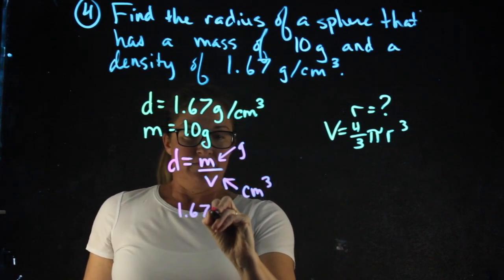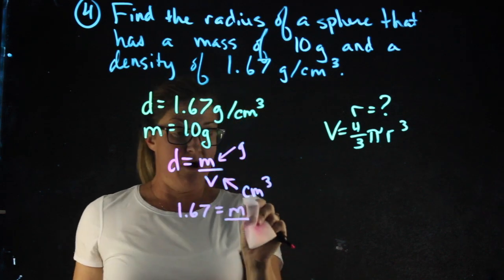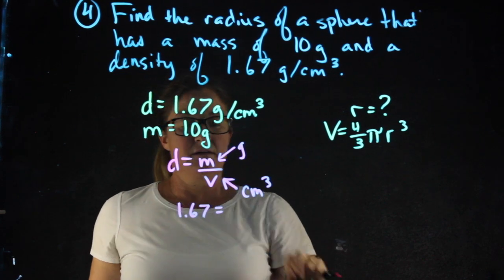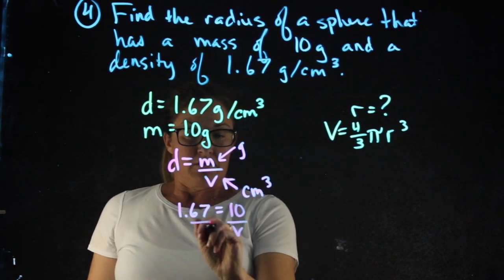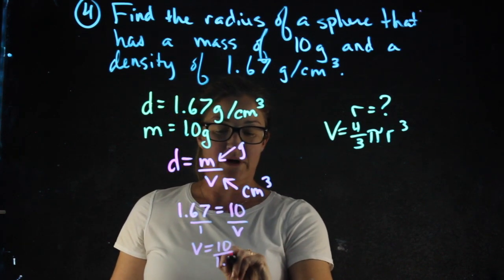1.67 equals m, which I know, and the mass is 10, over my volume. Cross multiplying, I will have volume equals 10 over 1.67.